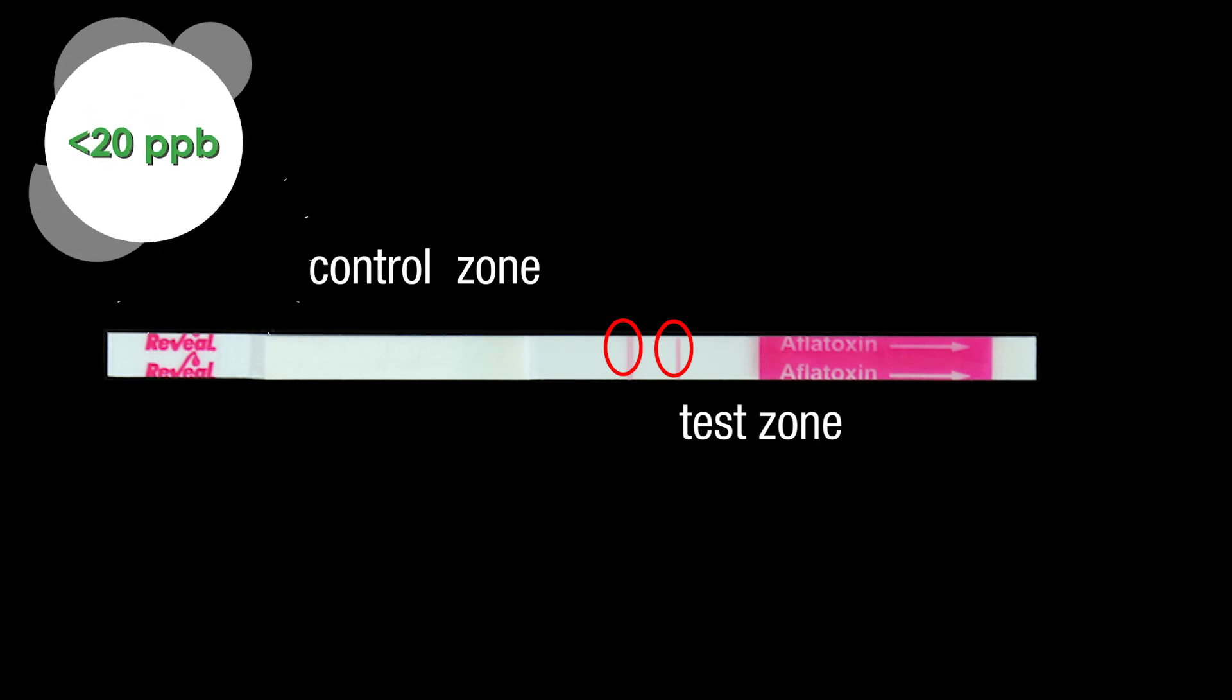If a line forms in the test zone and another line forms in the control zone within three minutes, the sample contains less than 20 parts per billion of aflatoxin and is a negative sample. A negative sample may be determined as soon as two lines are visible on the strip.